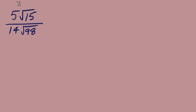There are two different kinds of simplifying to think about with these problems: simplifying the radicals and simplifying the fraction. Looking at 5 over 14 — can we simplify that fraction? No. Still thinking about the fraction, we look at 15 over 98 inside the radical — is there any number that divides evenly from both? There isn't, so we can't simplify the fraction.